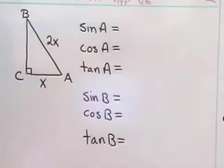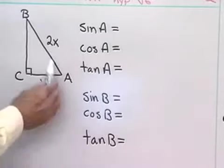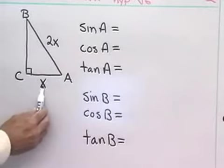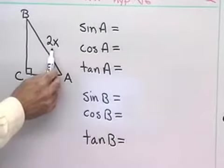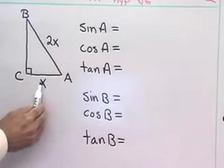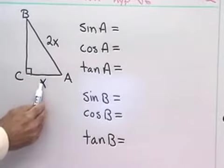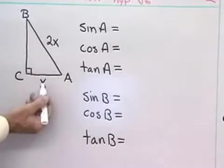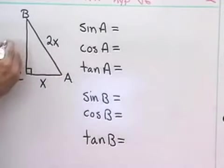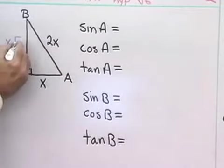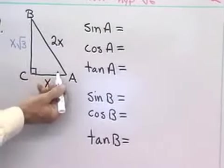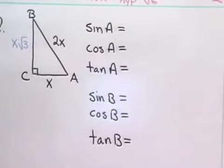Here's our next problem. I've drawn a diagram with triangle ABC where C is the right angle. The shortest side is x and the hypotenuse is 2x, so I recognize this as a 30-60-90 right triangle. This angle is 30 degrees, this is 60 degrees. If this side is x and the hypotenuse is 2x, then the remaining side is x square root of 3 — whether I use the Pythagorean theorem or recognize the 30-60-90 triangle.